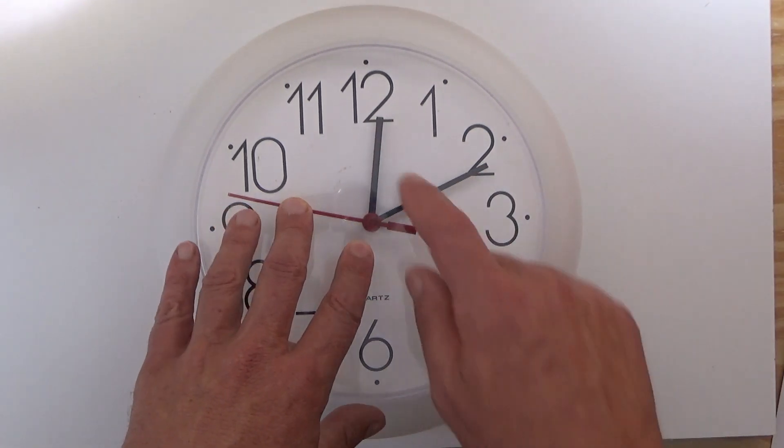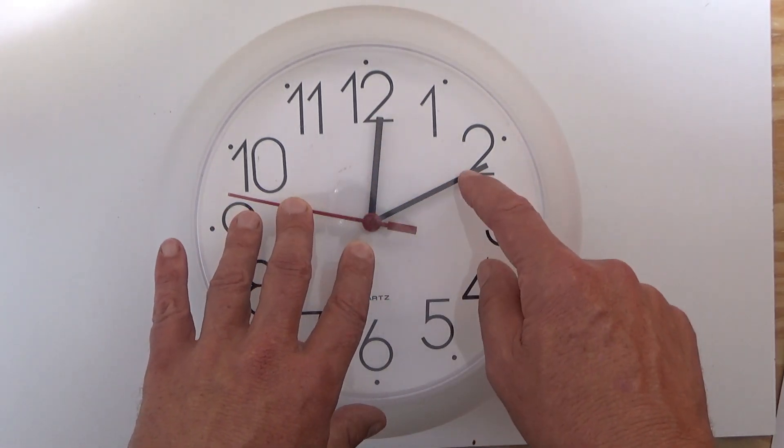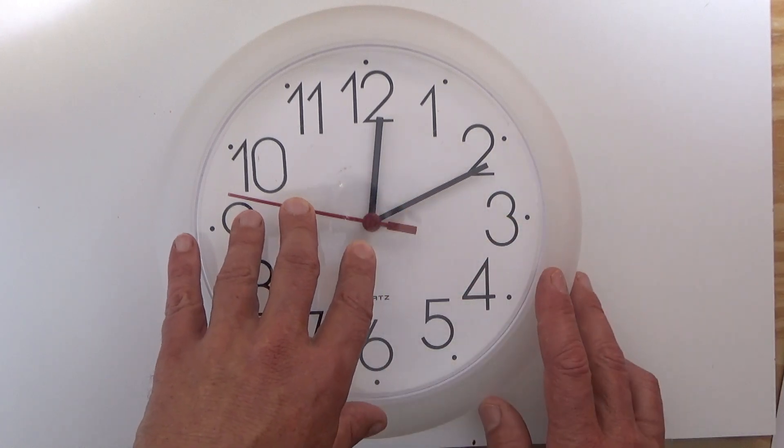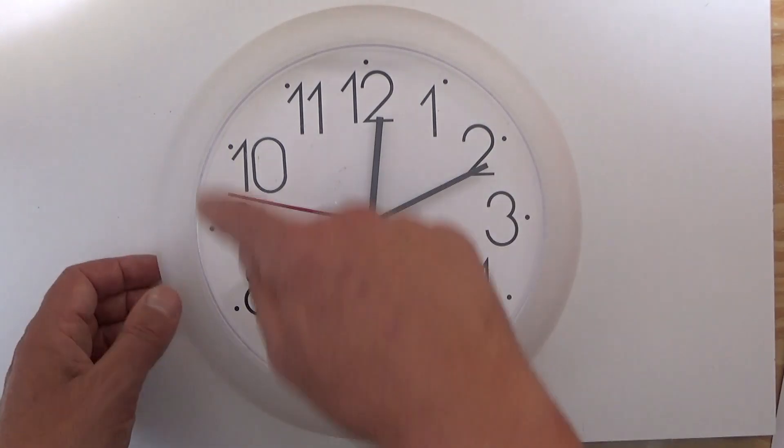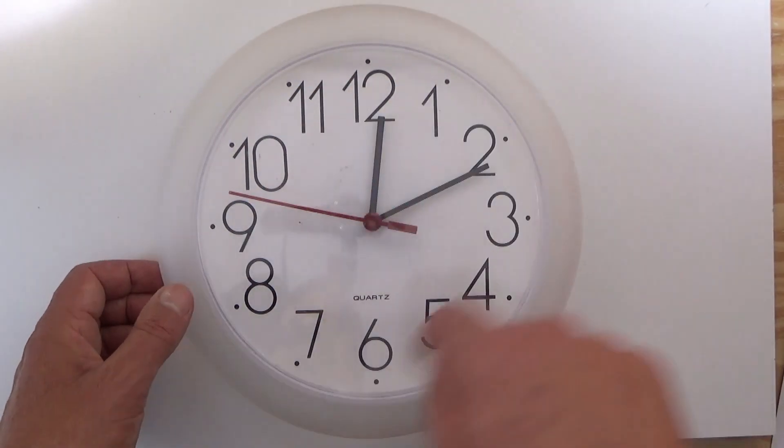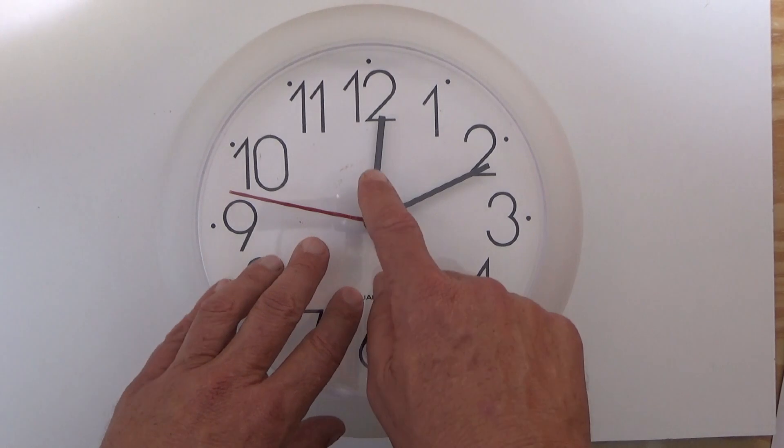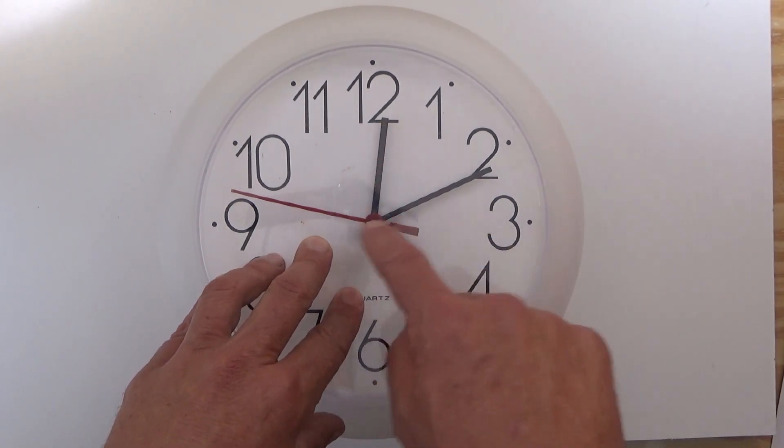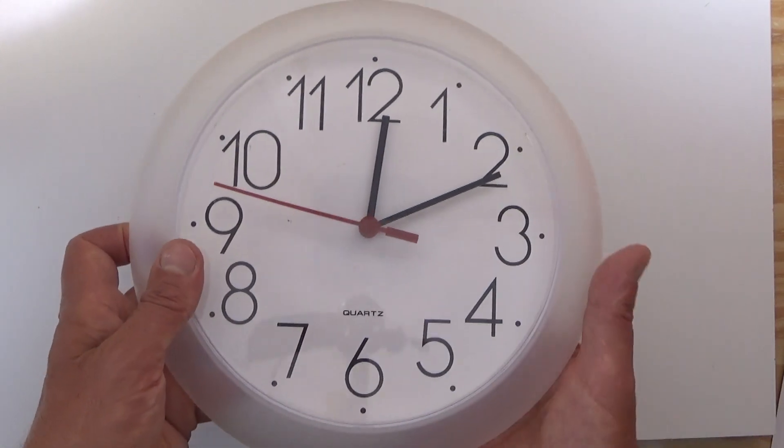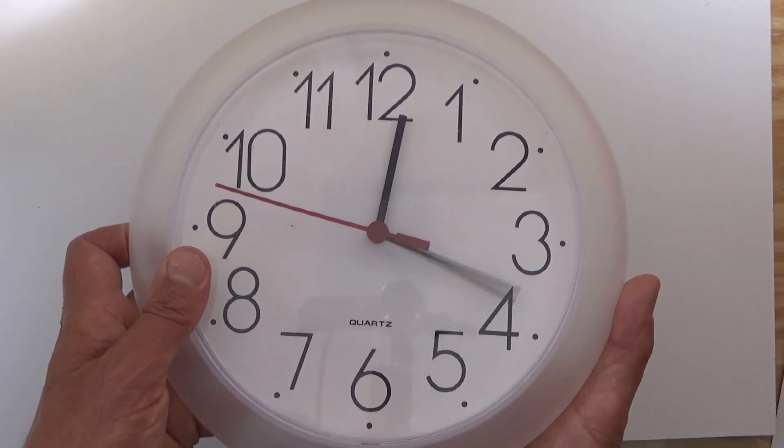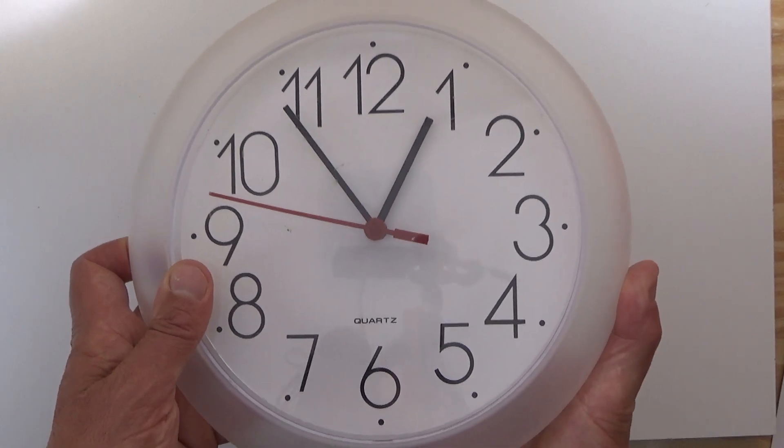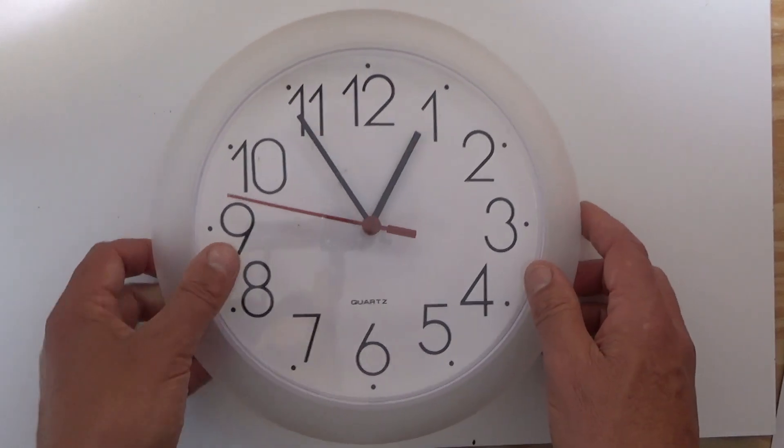We want to see how many times those two hands have a 60-degree angle between them in a 24-hour day as the hands rotate around the clock. The first time is at 12:11, you can see there that's 60 degrees. And then the next time is here at 12:54.